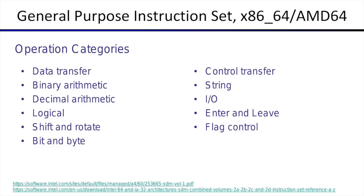Now comes the instruction set. The x86 processor is a CISC processor — complex instruction set — and the instruction set goes across many categories for general purpose computation: data transfer, binary arithmetic, decimal arithmetic, logical, shift rotate, bit and byte manipulations, control transfers, string operations, IO operations, enter and leave for procedure calls, and flag control. All these categories have corresponding instructions. We will now understand some of these instructions in more detail so we can understand our assembly program.